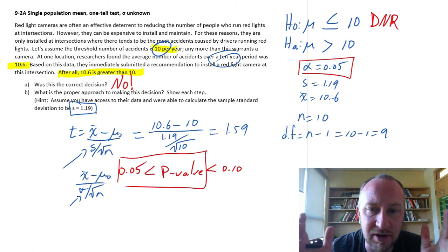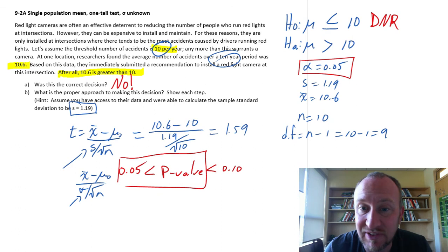So we do not reject the null hypothesis. There is no reason to put a, at least no statistically valid reason to put our red light cameras here.